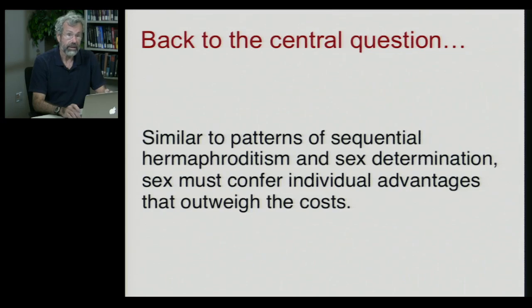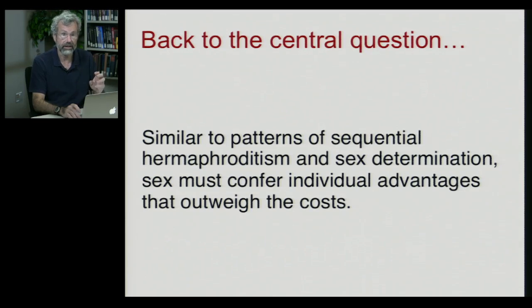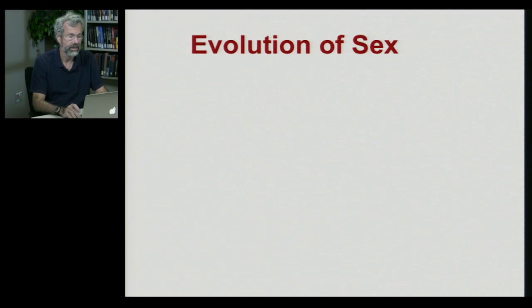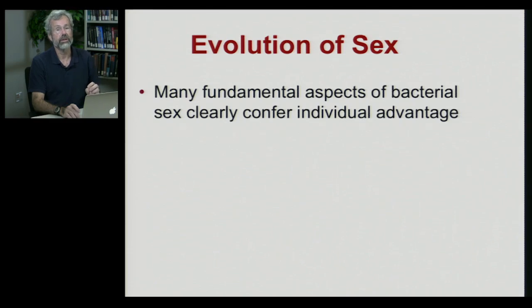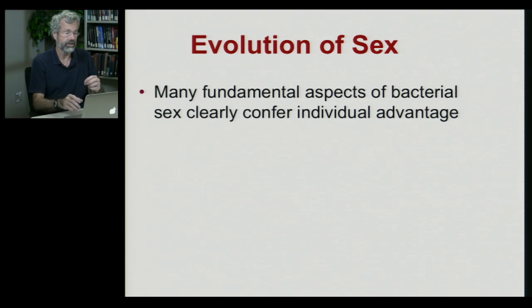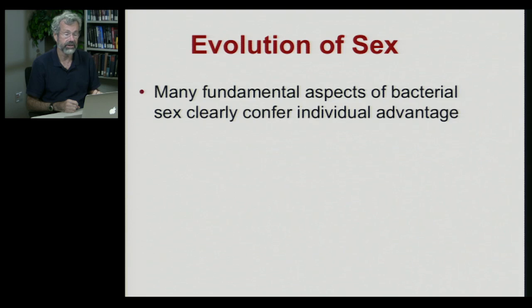Now we're ready to return to the fundamental question of the day. Similar to patterns of sequential hermaphroditism and sex determination, sex itself must confer individual advantages that outweigh the apparent costs. Looking at the evolution of sex, it's a good idea to start with the bacteria, because sex and reproduction are different processes in bacteria. Many fundamental aspects of bacterial sex clearly confer individual advantage.